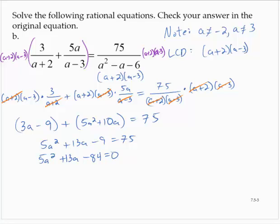All right, so I'm going to solve this. I think it'll factor, but I'm just going to use the quadratic formula. Now a would equal negative 13 plus or minus the square root of 169 minus 4 times 5 times negative 84. That's going to be a plus. 4 times 5 times 84 is 1,680.